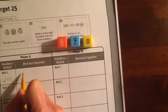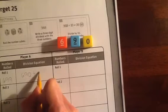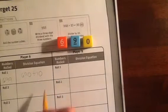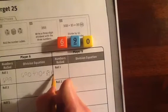My equation is going to be 690 divided by 10. We're always going to divide by 10, and my answer is going to be 69 with a remainder of 0.